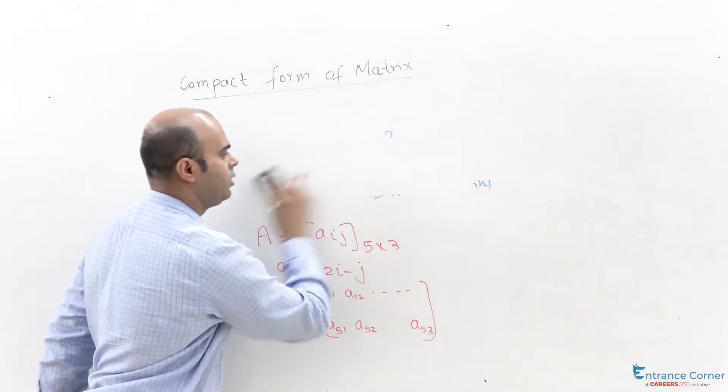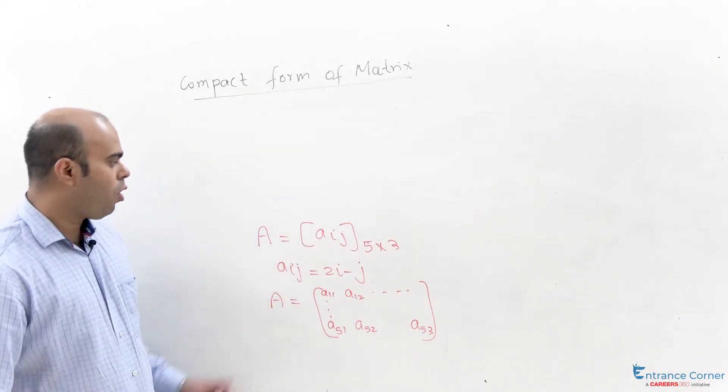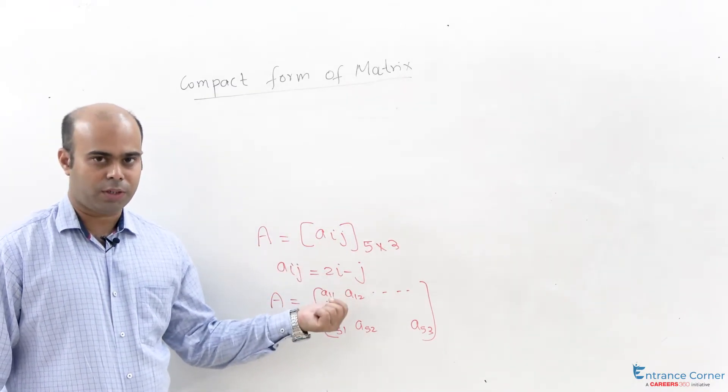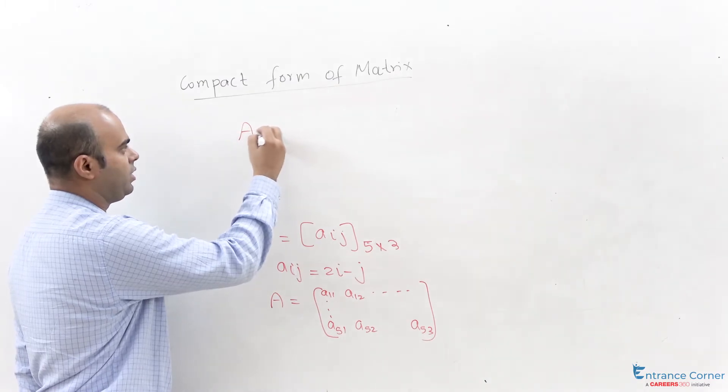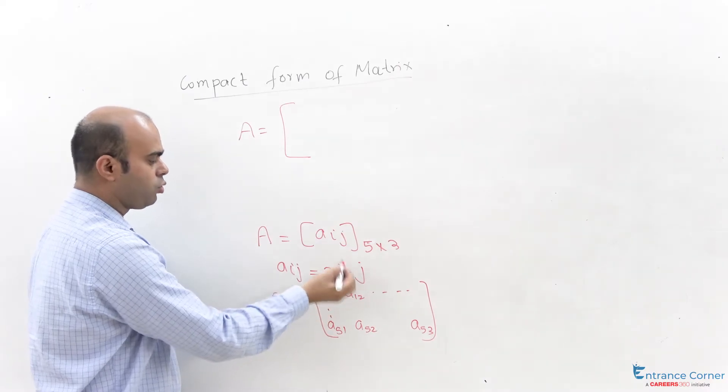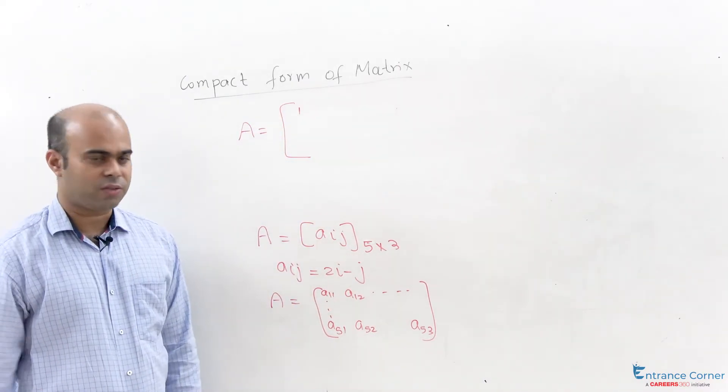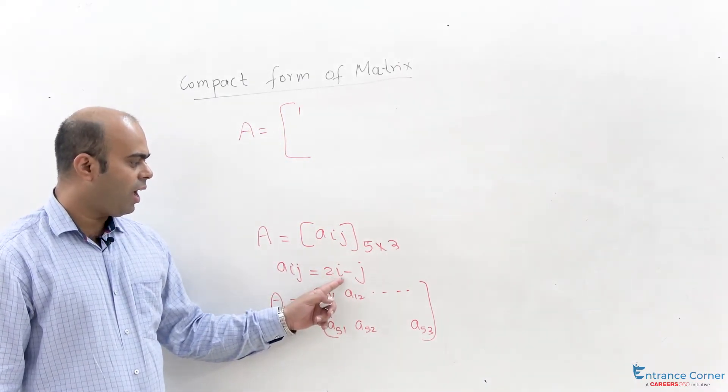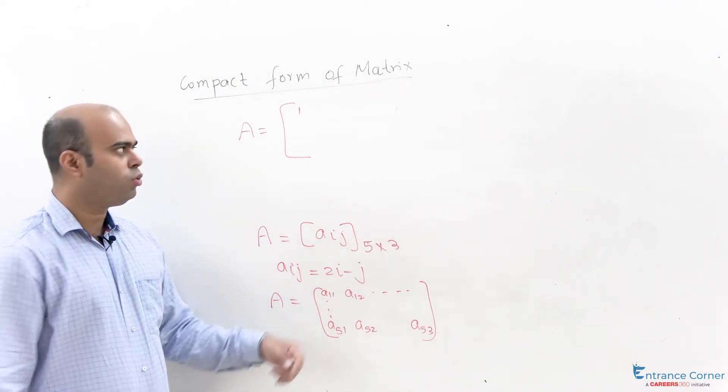When we apply this definition of compact form in this particular case, a11 would be the value when i is 1 and j is 1. So final value will be 2 minus 1, which is 1. If we take a12, i is 1 and j is 2, this will be 2 minus 2, which is 0.